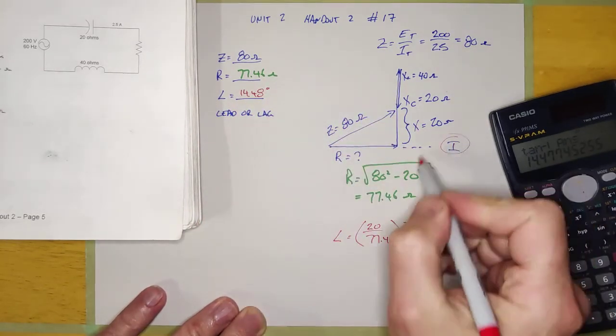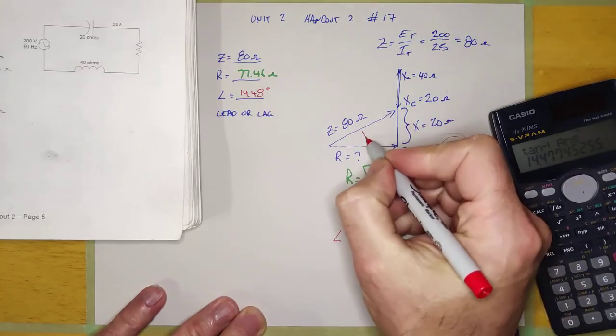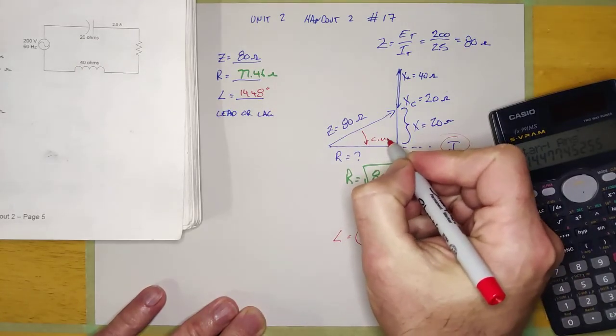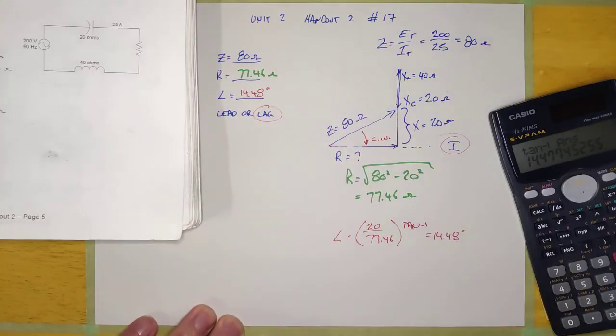Leading or lagging? Here's the current. It is clockwise. This circuit lags. Okay, hopefully that helps.